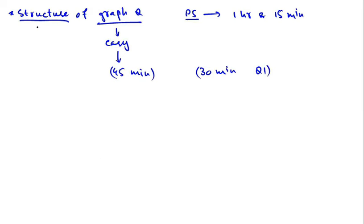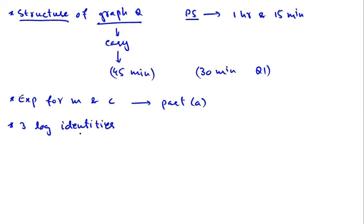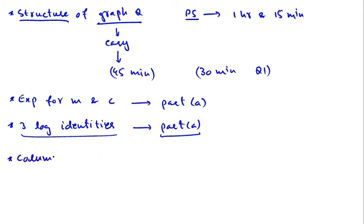Knowing the structure of the graph question will save you a lot of time and you will never feel lost. After that, I'll teach you one method of determining the expression for gradient and y-intercept from the given equation. After learning that method, we'll do part A of one or two graph questions in the workbook, then I'll teach you the three logarithmic identities, and finally two rules for writing column headings — and we will do a section of part B.